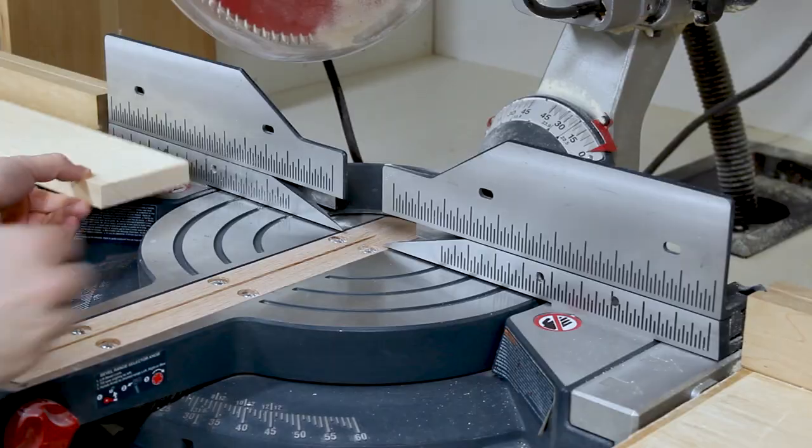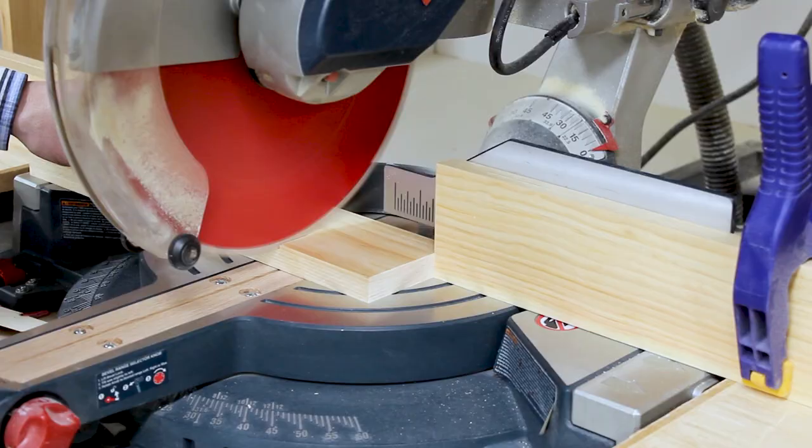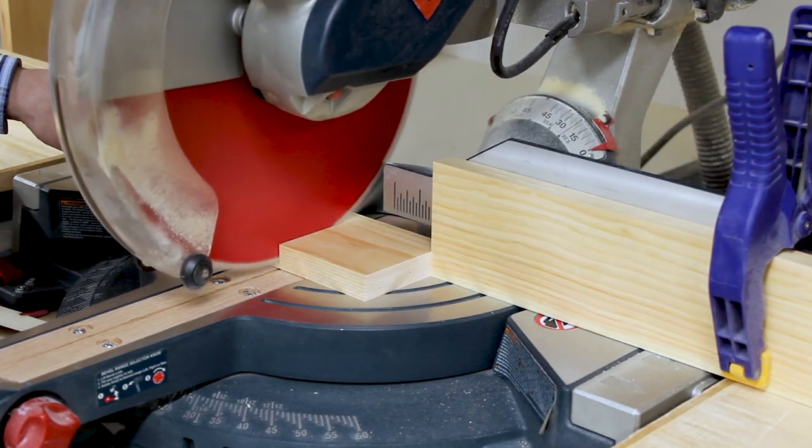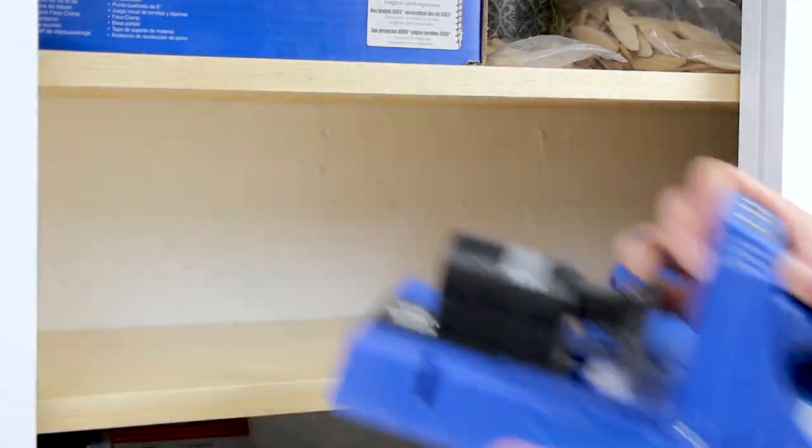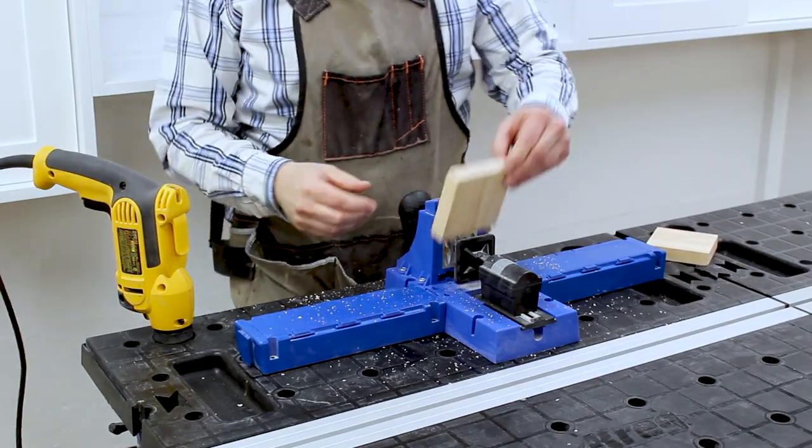Next, I started working on the divider. I cut two pieces of 1x4 to 22 and a quarter inches for the styles, and two pieces of 1x4 to 3 and 7 sixteenths for the rails. Then I drilled pocket holes on the ends of each rail.